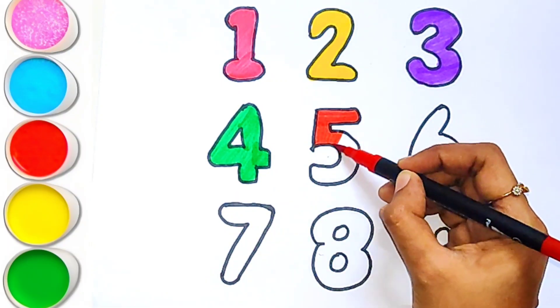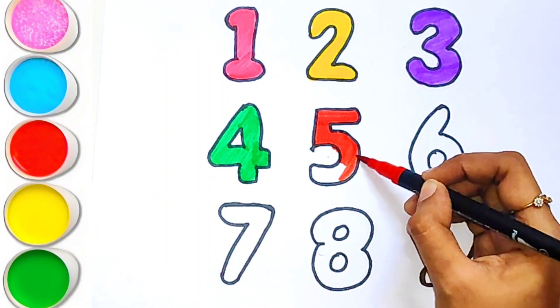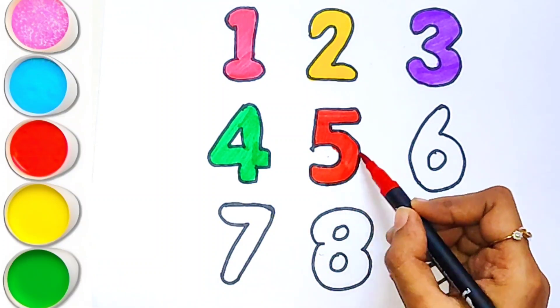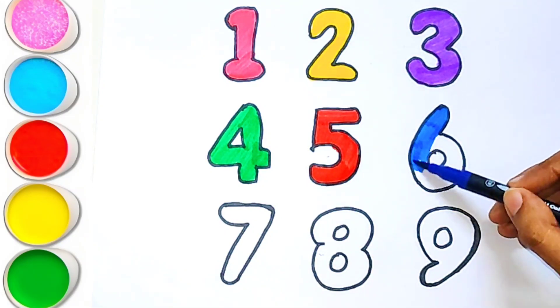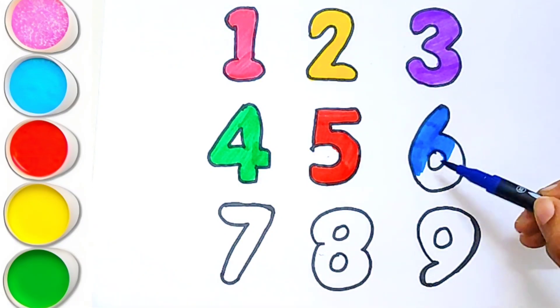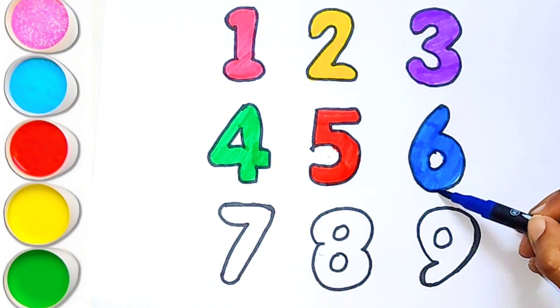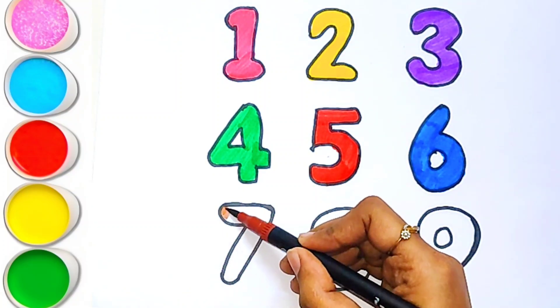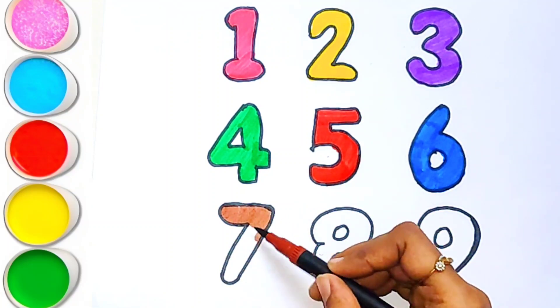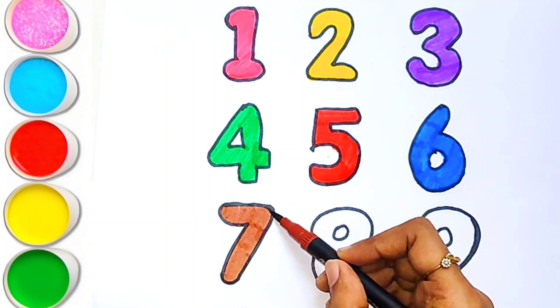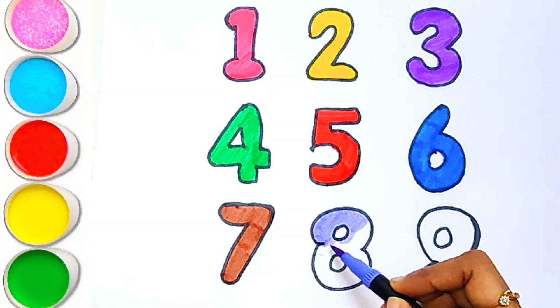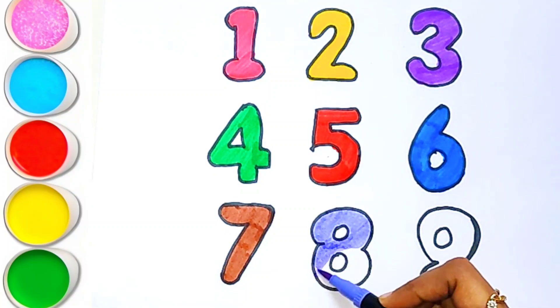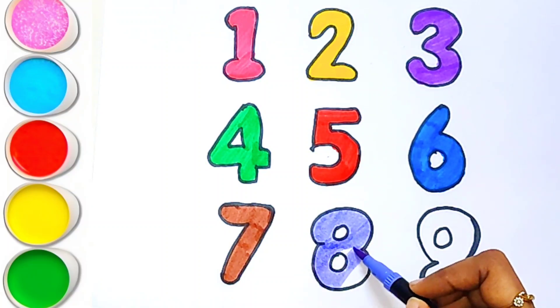Number five, this is dark blue color. Number six, this brown color. Number seven, this is purple color. Number eight.